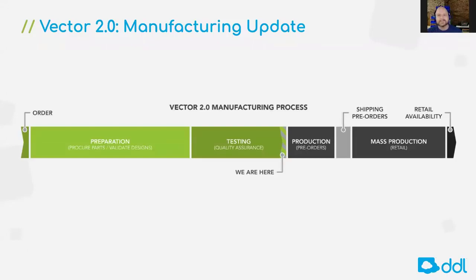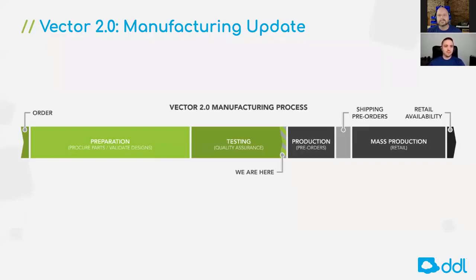We have had a few questions relating to Vector and the production for Vector 2.0. The first question: whether or not third-party accessories designed for Vector 1.0 robots might be compatible with Cosmo and Vector 2.0 units. We can't promise that products made by other companies are going to fit, but Robbie, Jacob — any comments on those third-party accessories?